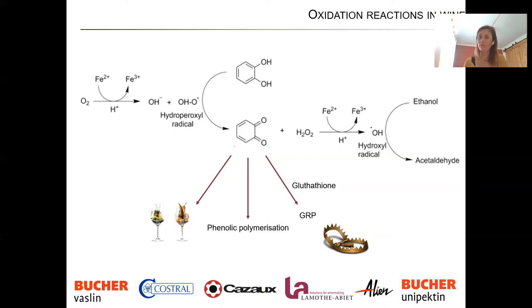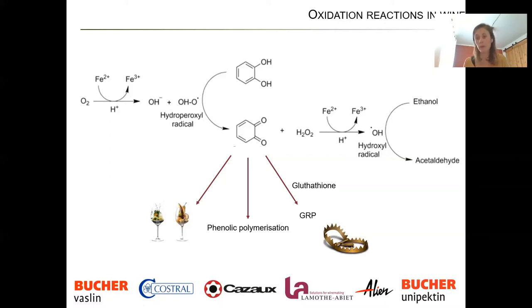Once we no longer have glutathione, the quinone starts reacting with other phenolic compounds — mostly unstable ones such as free anthocyanins. Free anthocyanins, which are usually responsible for color, will become brown. This polymerization via the quinone leads to loss of structure, loss of color, and browning.